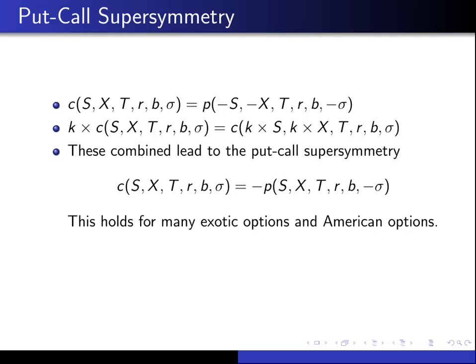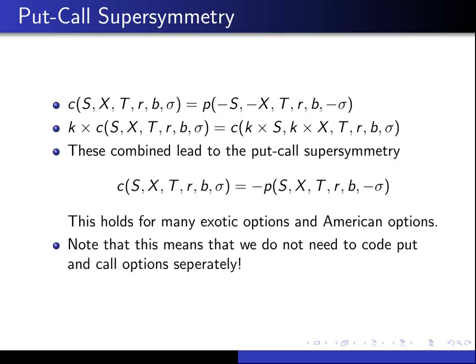So it's pretty universal. This means that we don't need to code PUT and CALL options separately, since by just using this supersymmetry, we can get all our PUT option values using our CALL option function. That finishes up our quick look at symmetries.